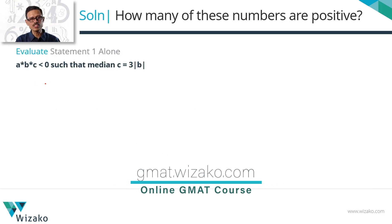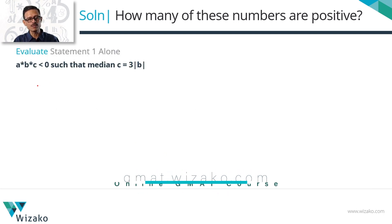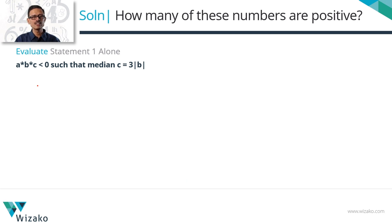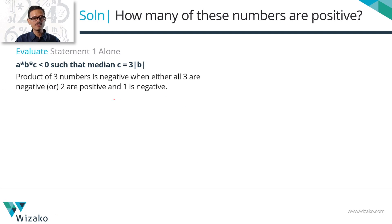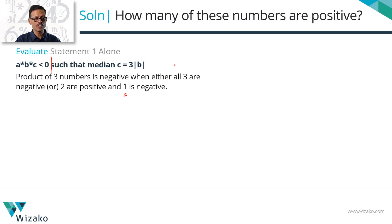Statement 1 packs in a lot of information — let's break it down. The product of three numbers is negative when all three are negative, or when two are positive and one is negative. So from the first part alone, we have two possibilities: either two numbers are positive, or none are positive.